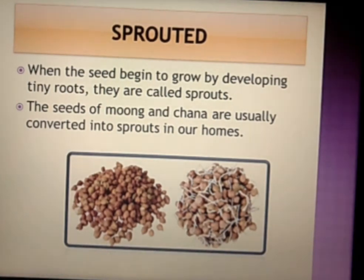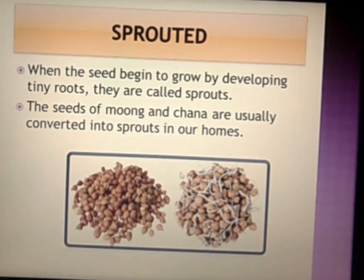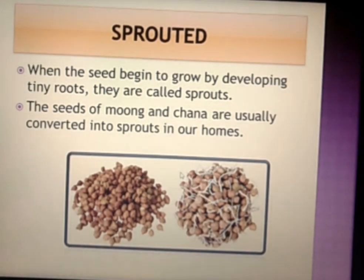In the next slide, we cover sprouted seeds. When seeds begin to grow by developing tiny roots, they are called sprouts. The seeds of moong and chana are usually converted into sprouts at home. Here is a picture of chana — from the chana, small roots begin to develop. This process is called sprouting, which means Ankurit chana. Sprouted seeds are good for your health.